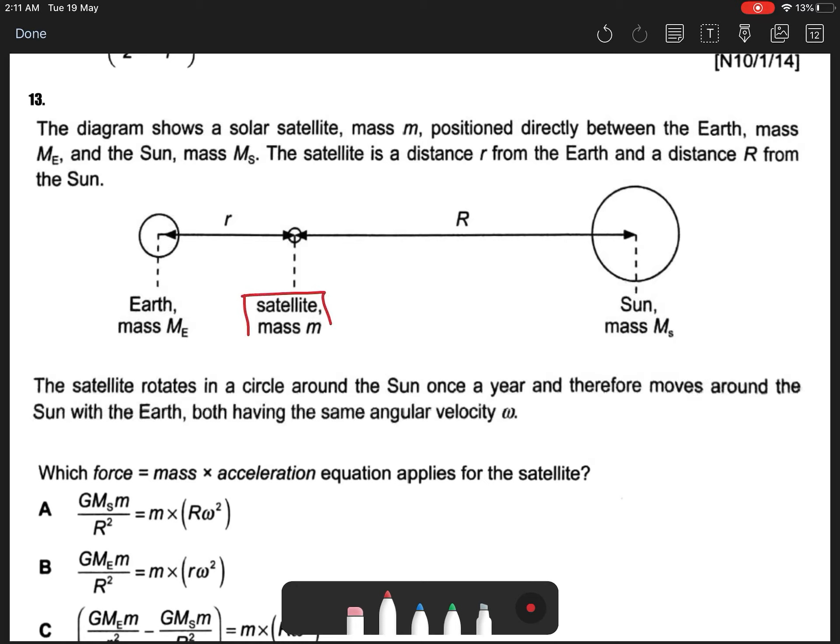So our main thing is satellite m. Okay, although Earth and satellite, they are quite massive, but still the Sun, Ms, is much bigger than your Me plus your small m. So your center of gravity is still inside the Sun.